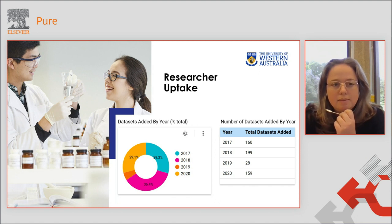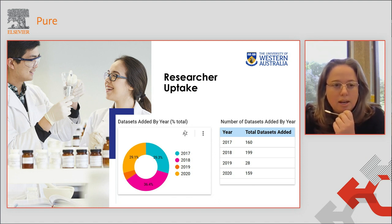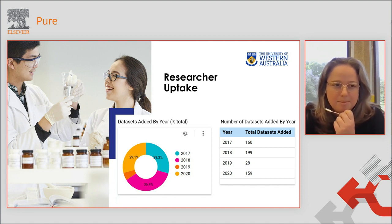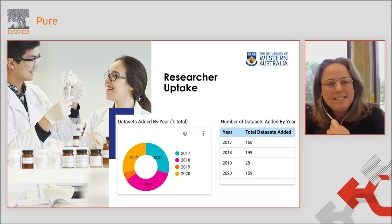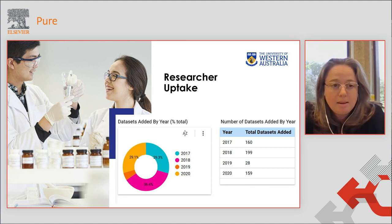In 2017 we actually migrated our data across, and in 2018 we had a big uptake by our researchers who added nearly 200 datasets for us. In 2019 we had a drop, perhaps because of publishers recommending their preferred data repositories.